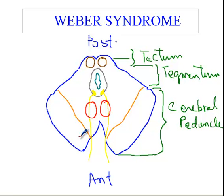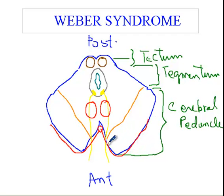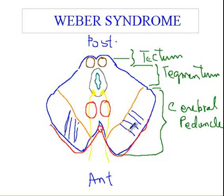The midbrain is supplied by branches of the posterior cerebral arteries. The basilar artery divides into the two posterior cerebral arteries, and some of the perforator arteries go and supply the corticospinal tracts, which are around this area here. You also have the corticobulbar tracts around this area.